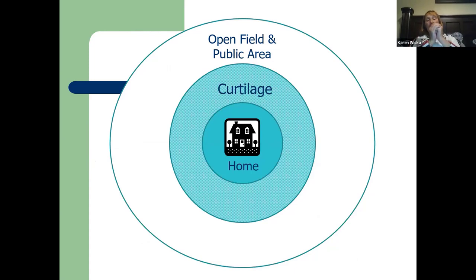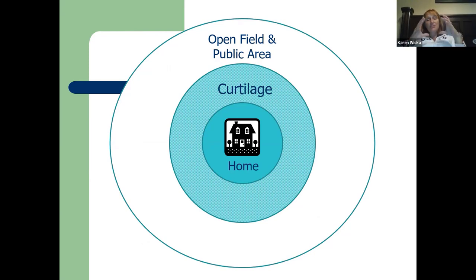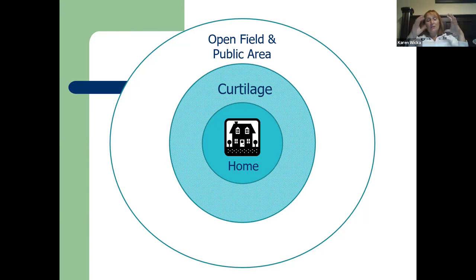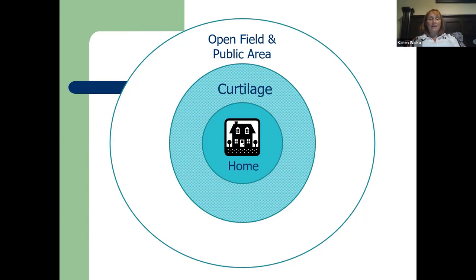Think of it this way: your home is the center — the most protected, with express Fourth Amendment protection. The curtilage surrounding the home has some protection under the expectation of privacy test, less than the home itself. Open or public areas beyond the curtilage have no protection at all. This visual helps you see the layered protection levels.